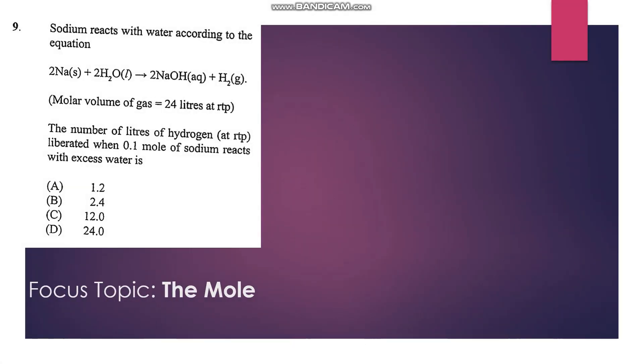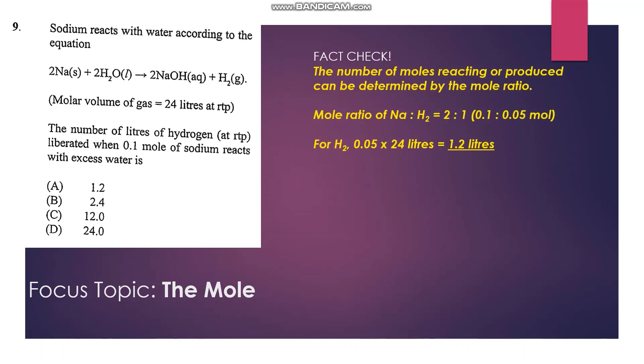Number 9: sodium reacts with water according to the equation. We have 2 sodium atoms reacting with 2 molecules of water to give 2 molecules of sodium hydroxide and 1 molecule of hydrogen gas. The number of liters of hydrogen at RTP liberated when 0.1 mole of sodium reacts with excess water is... We need to calculate that. We can look at the mole ratio to find out how many liters of hydrogen would be liberated. The mole ratio between sodium and hydrogen gas would be 2 to 1.